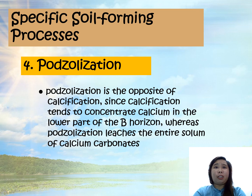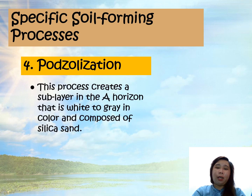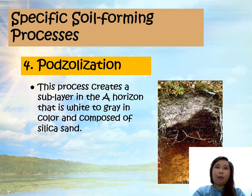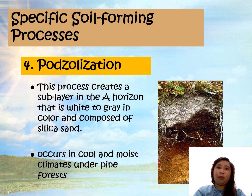While calcification tends to concentrate calcium in the lower part of the B horizon, podzolization leaches the entire soil of calcium carbonate. This process creates a sub-layer in the A horizon that is white to gray in color and composed of silica sand, as seen in the profile examples. This process usually occurs in cool and moist climates under fine forests.